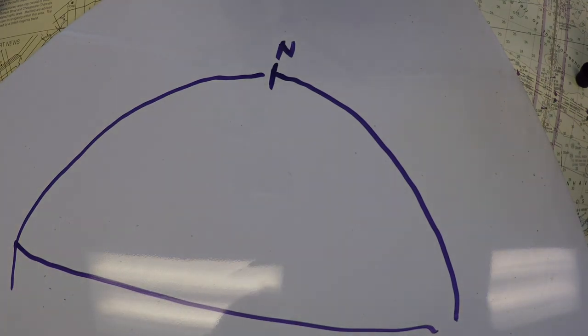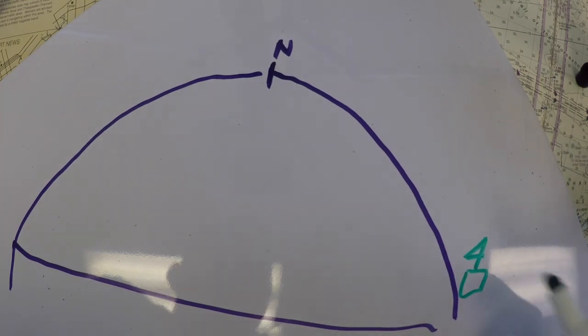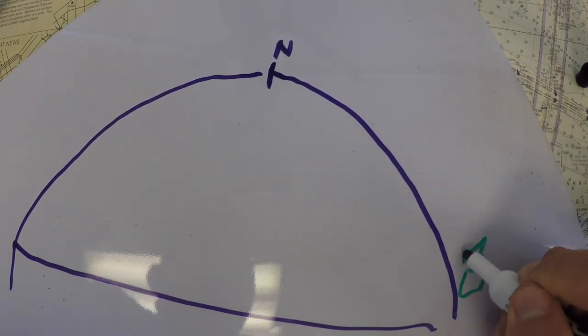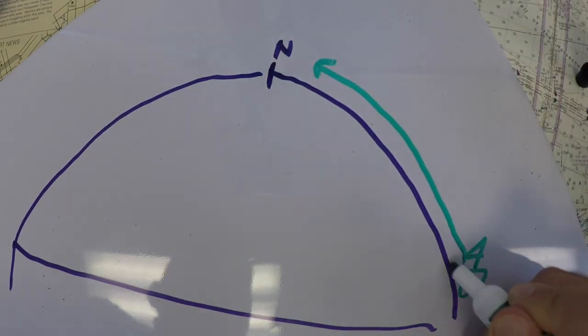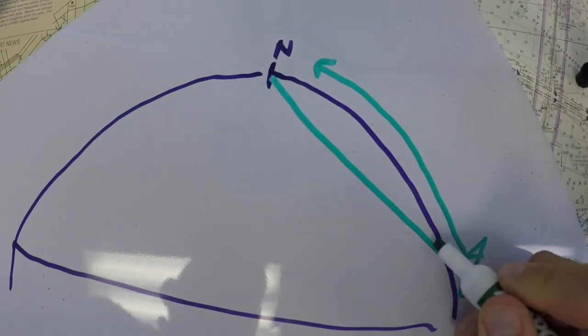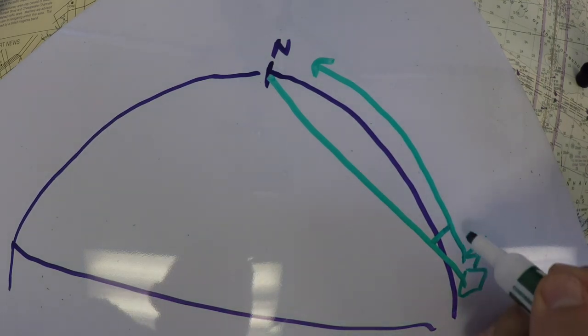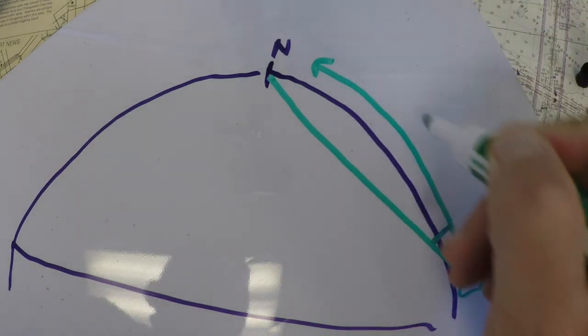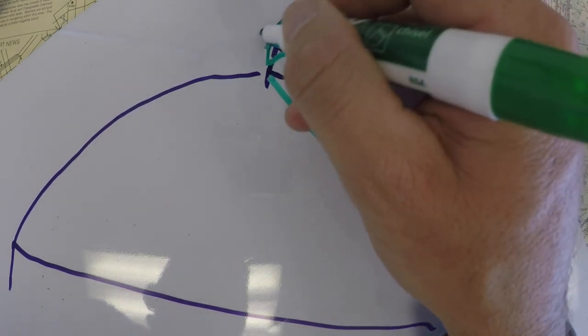And so if your ship now is over in this vicinity, your compass is not necessarily pointing along this path. Instead, it's pointing straight to the pole. So this is the angle called dip.